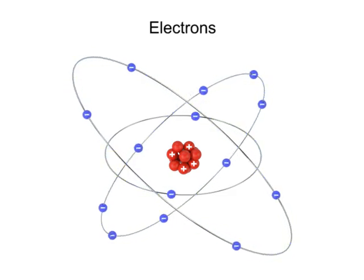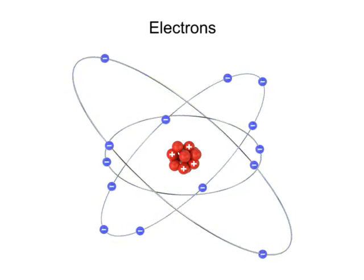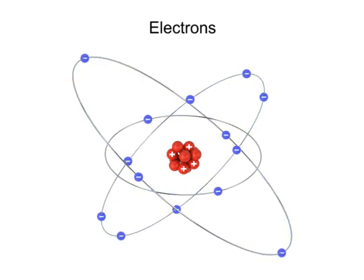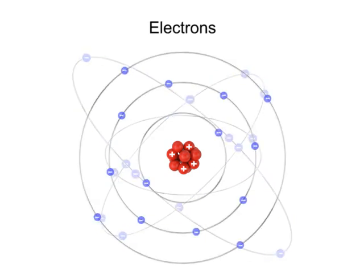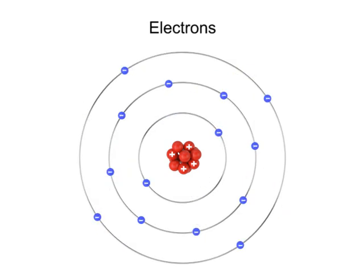Electrons move around a nucleus of an atom in concentric orbits. These orbits or shells represent different energy states that electrons can exhibit. The farther an electron is from the nucleus, the greater its potential energy.